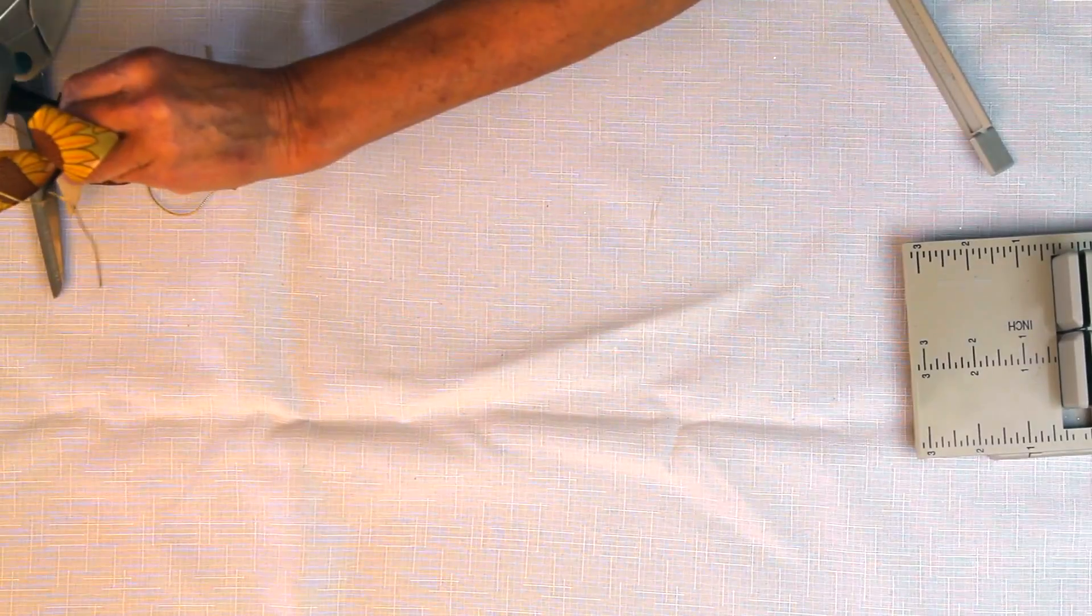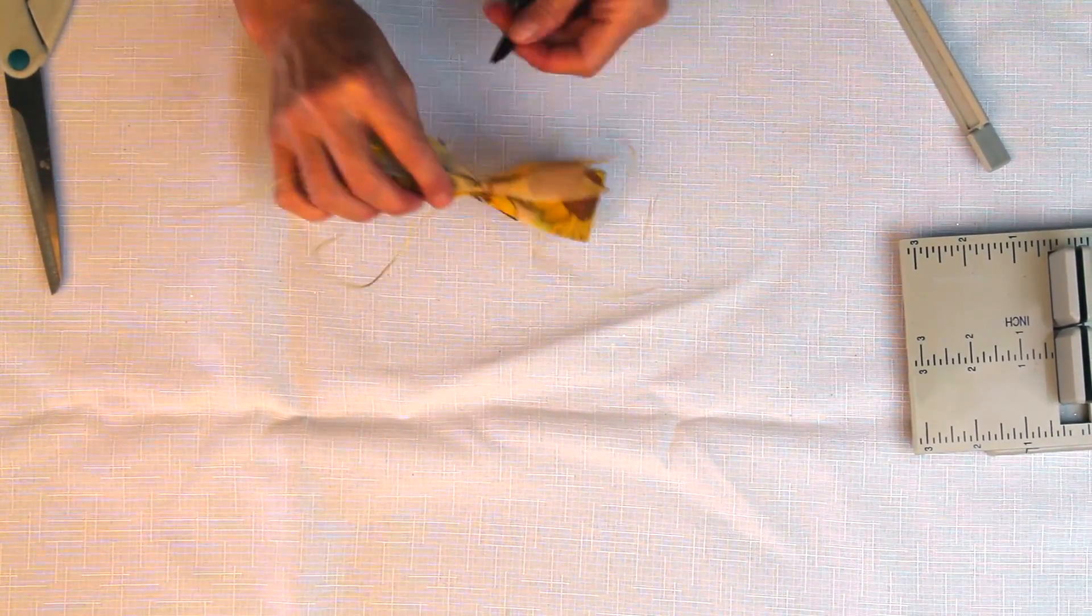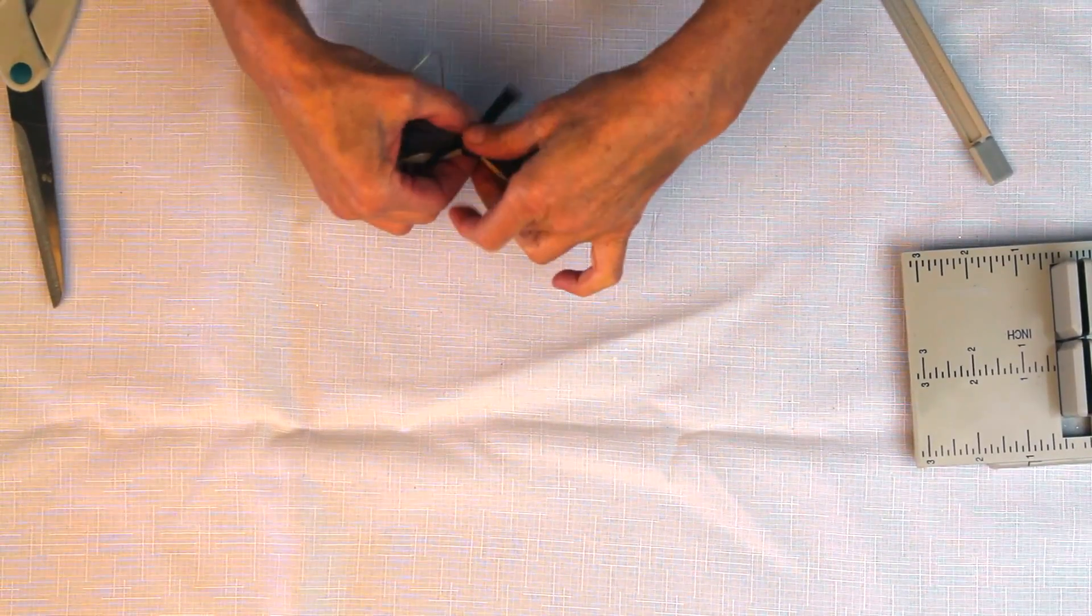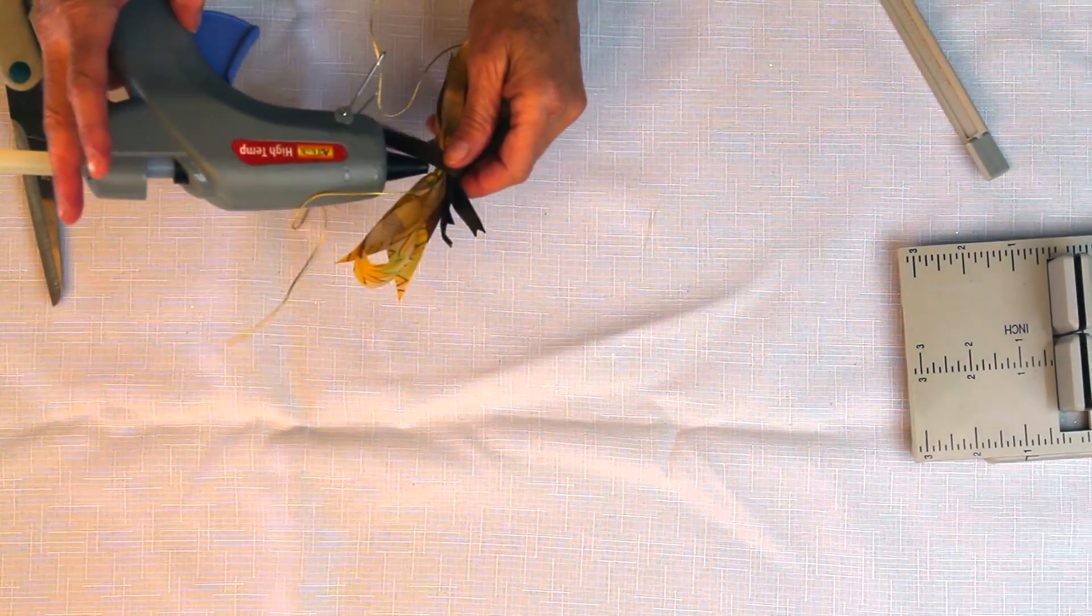So what I'm going to do is glue this strip on. So I'm going to take my glue gun, put a little bit of glue there. I'm just going to attach it here, bring it around to the front and then just glue it again, right here.